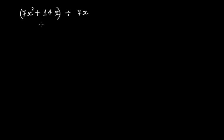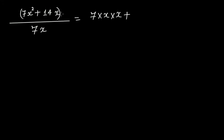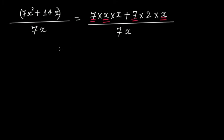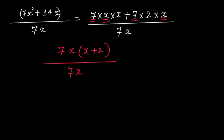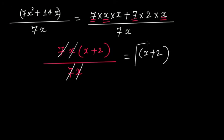This is the last example: (7x² + 14x) ÷ 7x. Write 7x² as 7 × x × x, and 14x as 7 × 2 × x, divided by 7x. Take 7x common: inside the bracket you have (x + 2), divided by 7x. Now 7x cancels, and you have x + 2 as the quotient. This is how we perform division of a polynomial by a monomial. In the next video tutorial, we are going to discuss how to divide a polynomial by a polynomial.